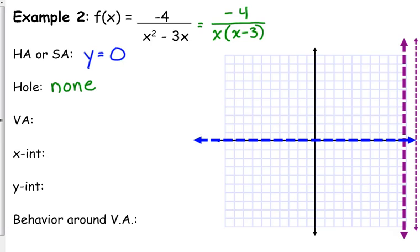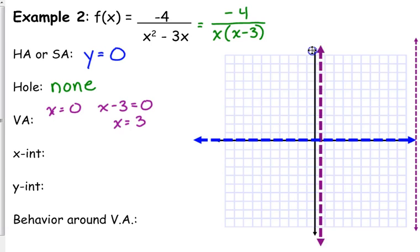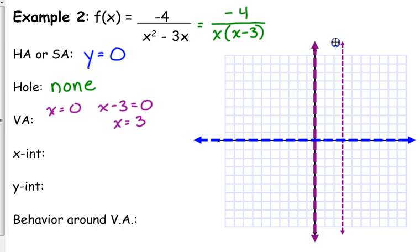Vertical asymptote. So we take what's left in the denominator. We've got x, and we have x minus three. So we've got x equals zero is a vertical asymptote, and we have x equals three is a vertical asymptote. So we have two vertical asymptotes here. That happens sometimes. So x equals zero is the y-axis, so put a thicker dashed line on the y-axis, and x equals three puts you a dashed line there when x equals three.